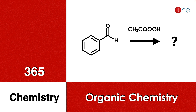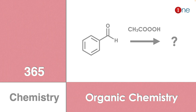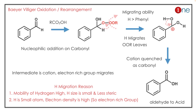Welcome to onchemistry, this is the 365 chemistry series. Here you have benzaldehyde reacting with peracid — you should find what the final product will be. You might recognize this as the Baeyer-Villiger oxidation.